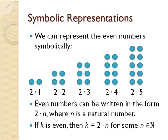Symbolically, we could represent the even numbers as 2 times 1, 2 times 2, 2 times 3, where it's 2 times the number of objects in a column. So in general, we can write an even number in the form 2 times n, where n is a natural number. Or state it another way. If k is an even integer, then k is going to equal 2 times n for some natural number n.